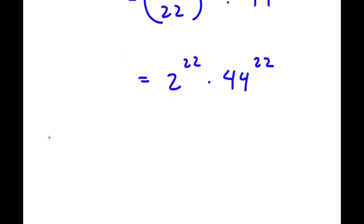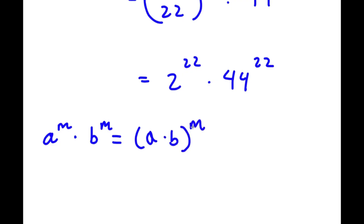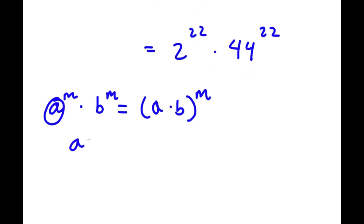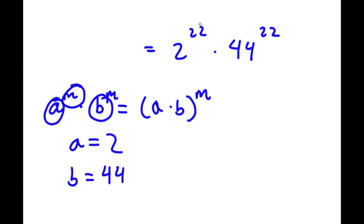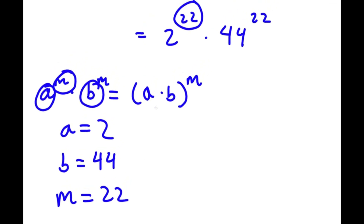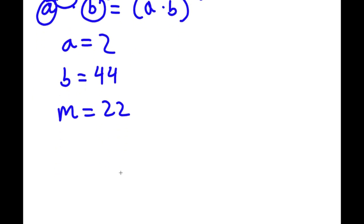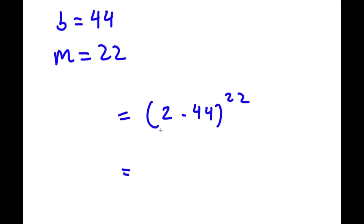Using the property a to the power of m times b to the power of m equals a times b to the power of m, with a equals 2, b equals 44, and m equals 22, we get 2 times 44 to the power of 22. Since 2 times 44 equals 88, the answer is 88 to the power of 22.